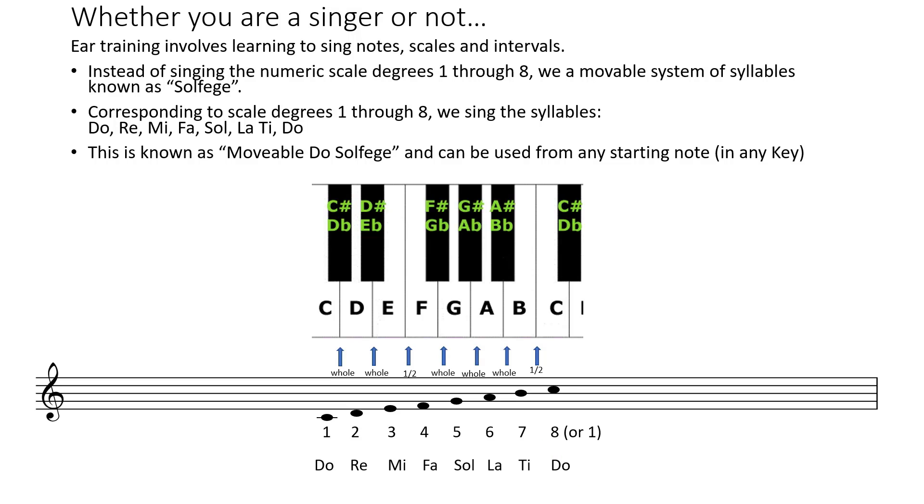This corresponds with 1, 2, 3, 4, 5, 6, 7, 8. This is known as movable Do solfege, and it can be used from any starting note in any key on any scale.